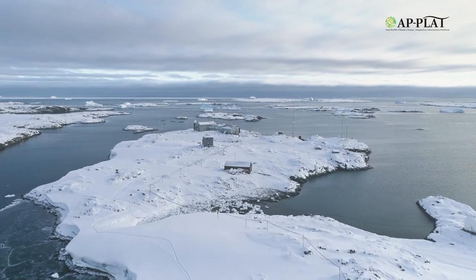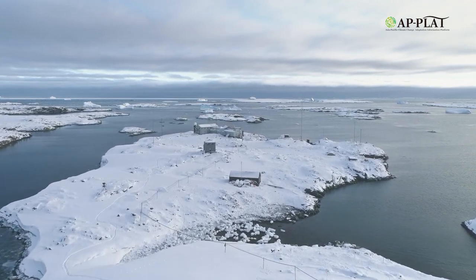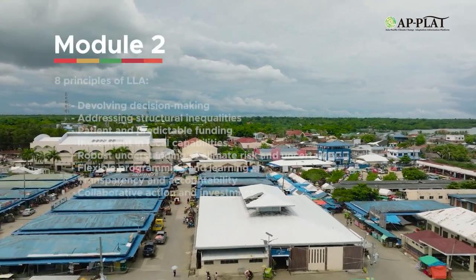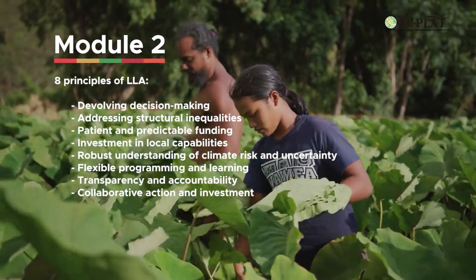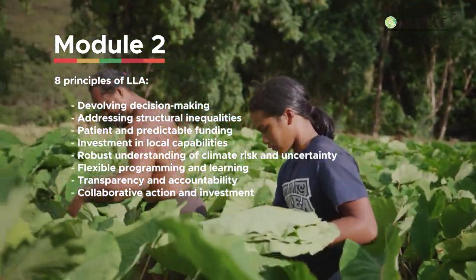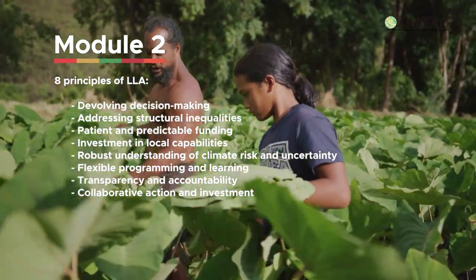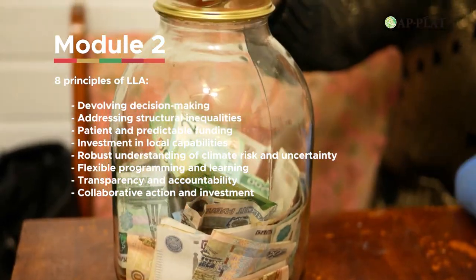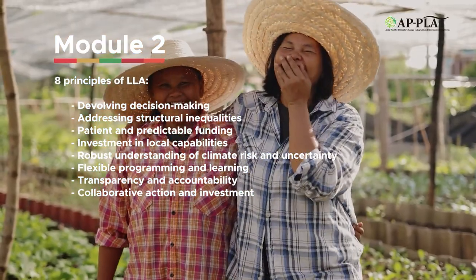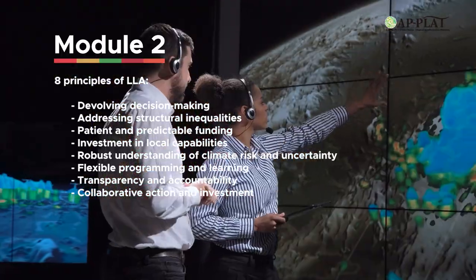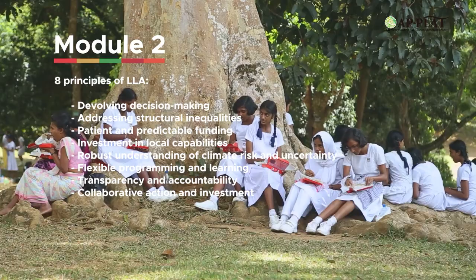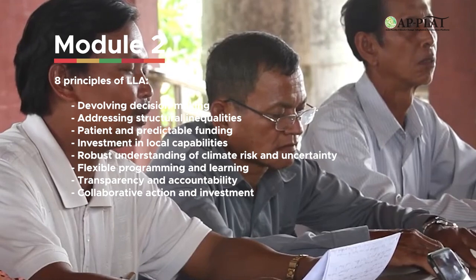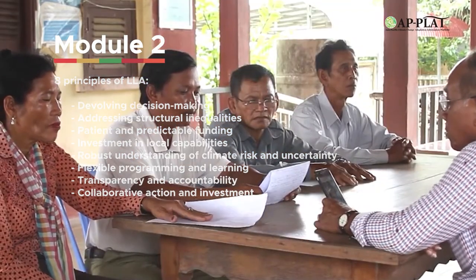In addition, you will also analyze if there is anything that should have been done better. In the previous sessions, we discussed the eight different principles on how communities were able to adapt to threats of climate change and gender equality and social inclusion. In this session, we will tackle different examples from around the world on how communities were able to cope and thrive despite the challenges brought about by the changing climate.